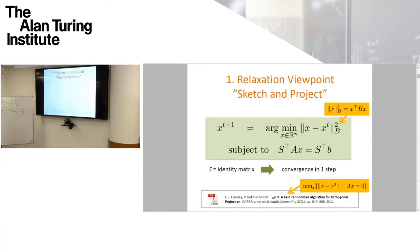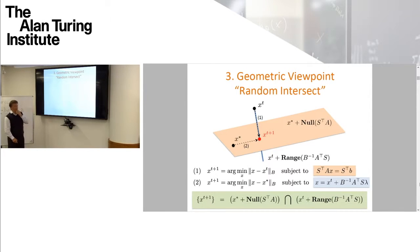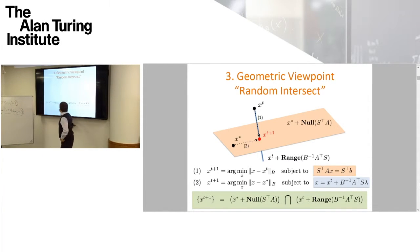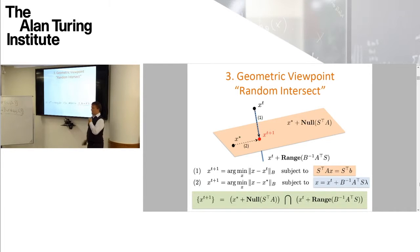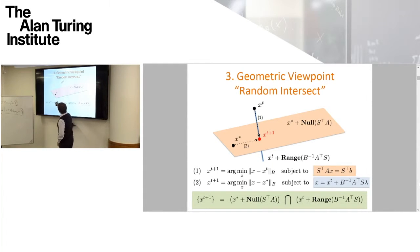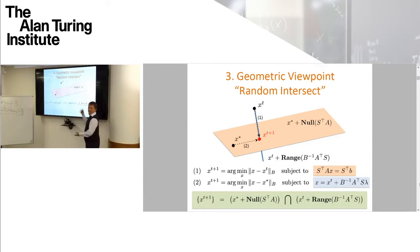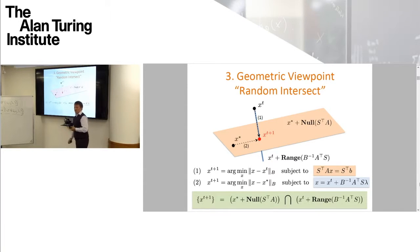We've got the primal and dual problem. For those who haven't seen duality before, here it is in the simplest setup. The first algorithm — let's call it sketch and project — sketches the system to get a random estimate, then projects the previous iterate onto the sketched system. If you draw what's going on: x-star lives in x-star plus the null space of S-transpose A (the pink space, the solution space of the sketch). X_t probably doesn't lie there, so we project x_t onto this sketch space to get the next iterate.